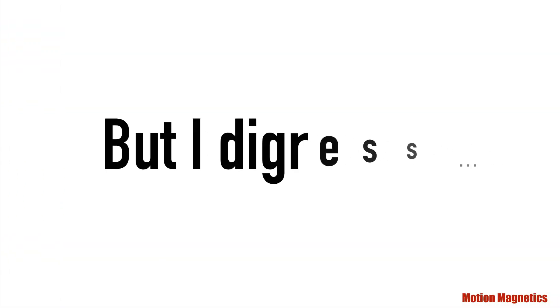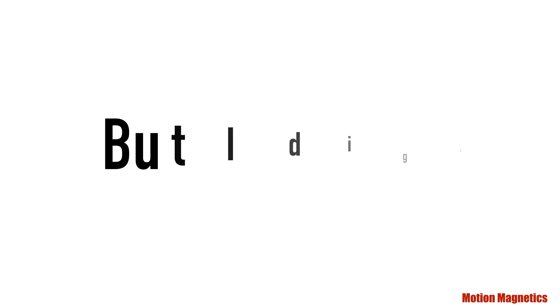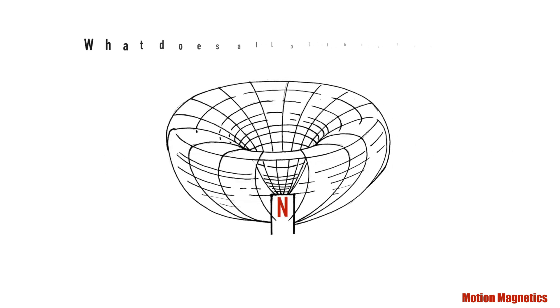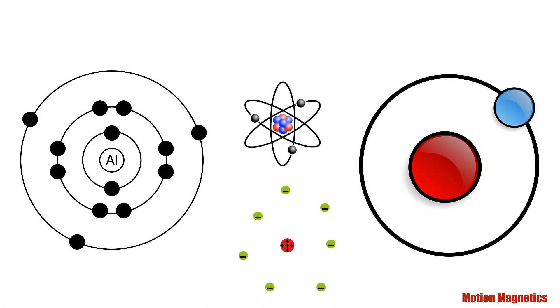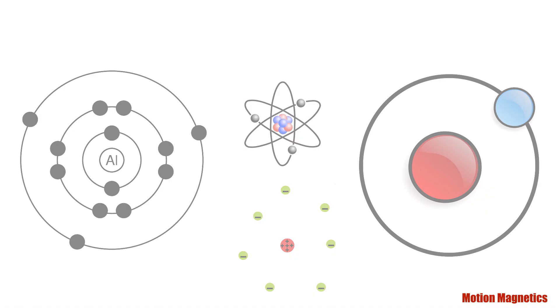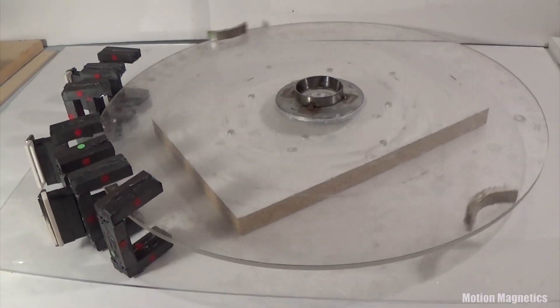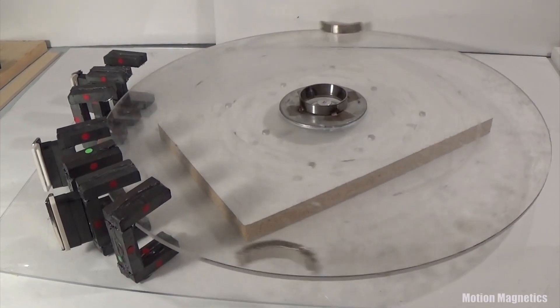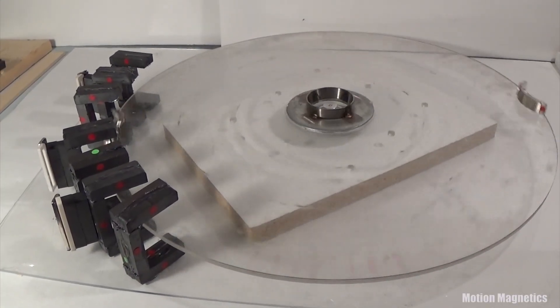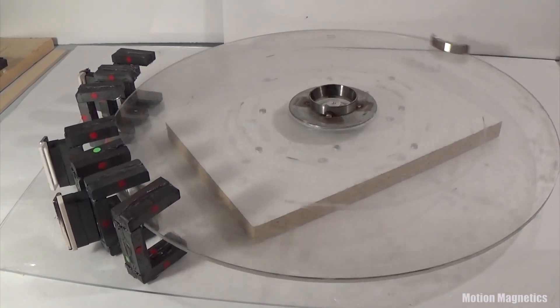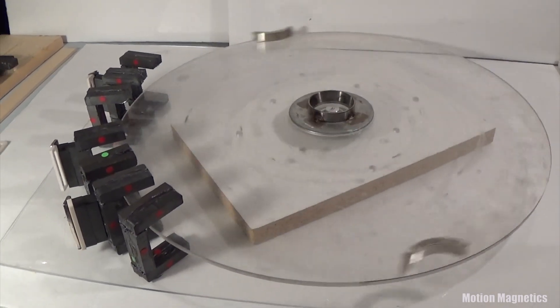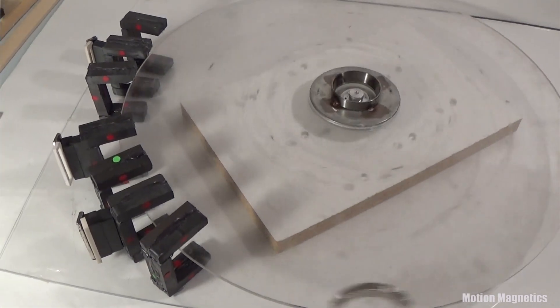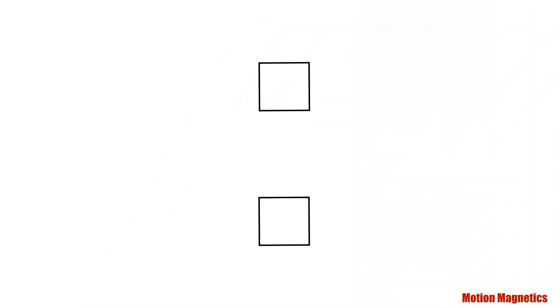But I digress. What does all of this have to do with the magnetic spin vortex? I've laid all of this out to explain that everything in nature at a molecular level already exhibits continuous spin. So it's not so much a matter of getting a magnetic structure to spin — the individual magnets are already spinning on a molecular level. Understanding the spin vortex of a magnet places you one step closer to building a magnet motive force closed-loop system.